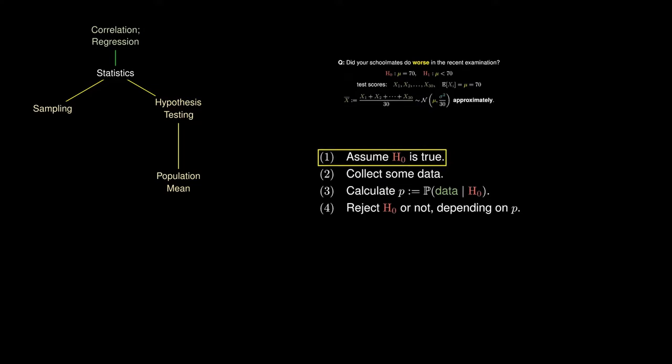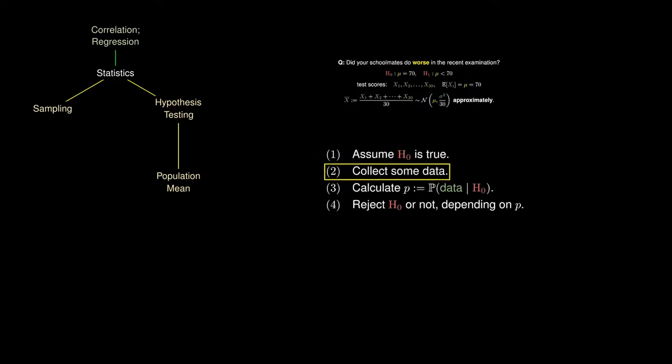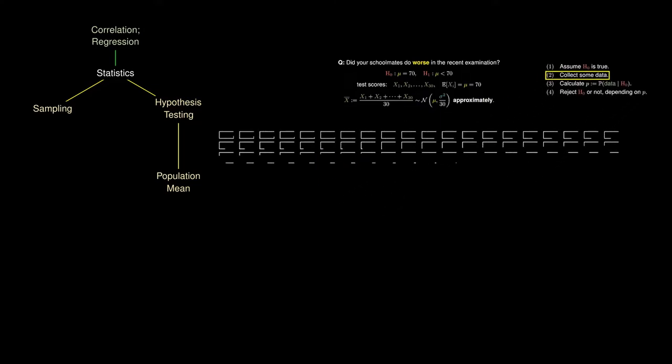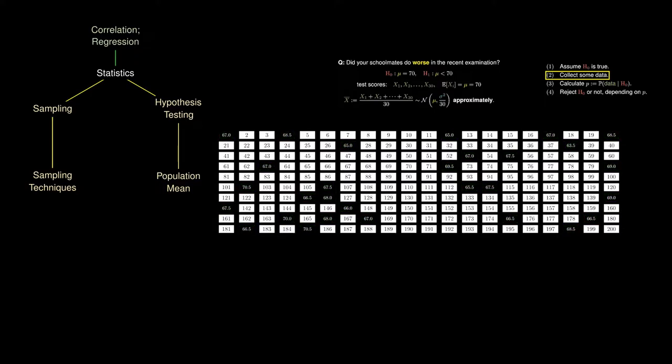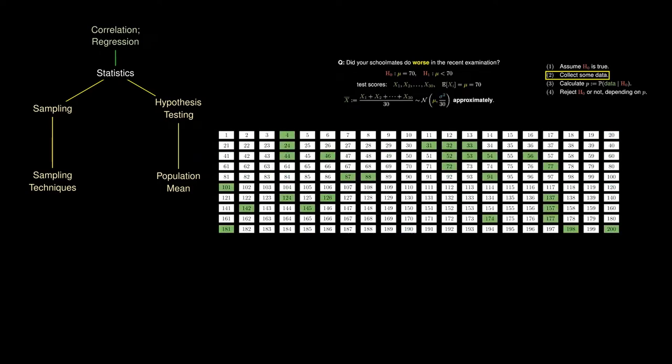Let's go ahead to collect some data. Suppose your school has 200 students. You could randomly choose 30 of these students and ask them for their test scores, and use this as your data. But you could have used other choices of 30 students. You've decided to do it in such a way that every student has an equal probability of being chosen. This allows your sample to be representative of the population.